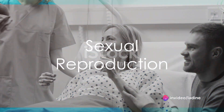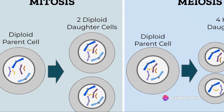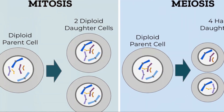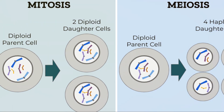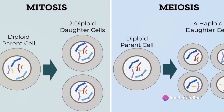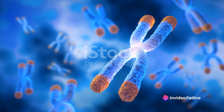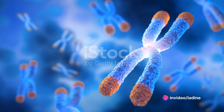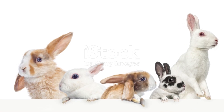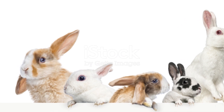Now, let's turn our attention to sexual reproduction, which involves a different kind of cell division — meiosis. This process occurs in sexually reproducing organisms and produces gametes, such as sperm and egg cells, each with half the chromosome number of the parent cell. Through processes like crossing over and random assortment of chromosomes, meiosis introduces genetic diversity, leading to the formation of genetically unique individuals.